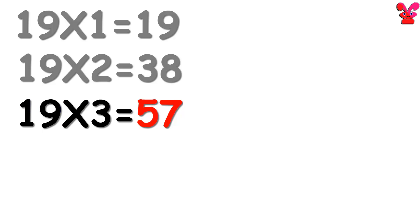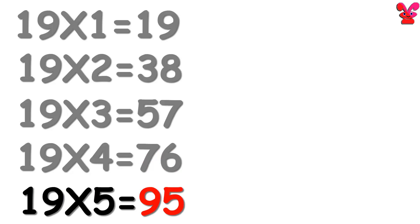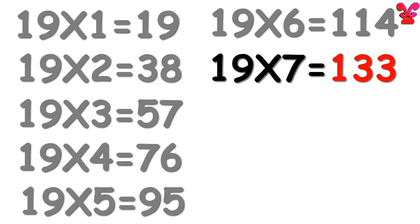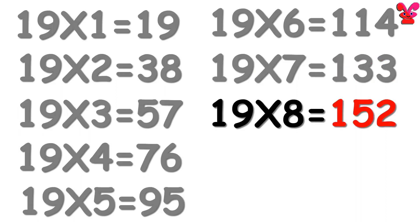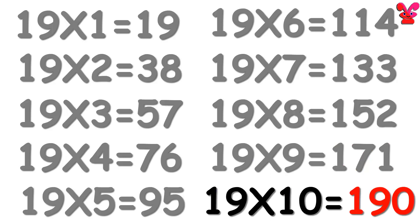19 threes are 57, 19 fours are 76, 19 fives are 95, 19 sixes are 114, 19 sevens are 133, 19 eights are 152, 19 nines are 171, 19 tens are 190.